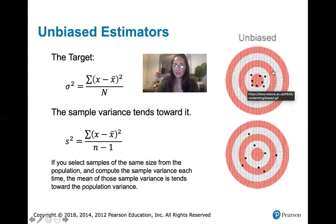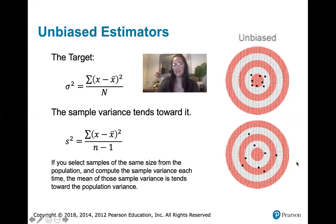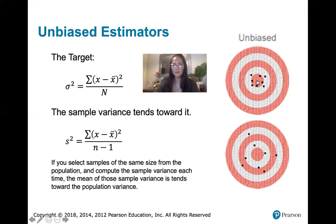It can be unbiased and have little variation like the top graph, or unbiased with more variation like the bottom one. But either way, if you take a mean of those values, the mean would be right on target. That's what we mean when we talk about unbiased estimators. We'll talk more about this in Chapter 7 when we study sampling distributions.